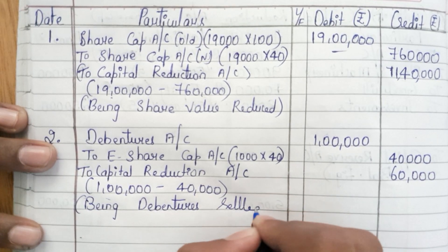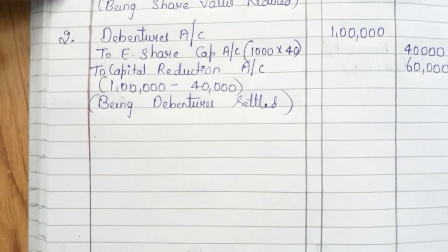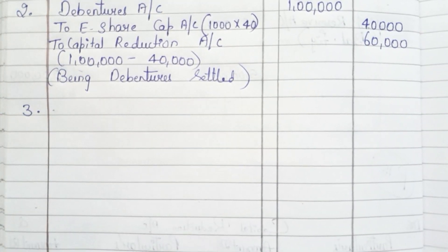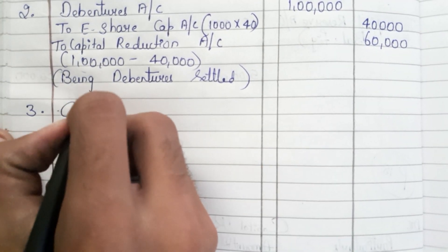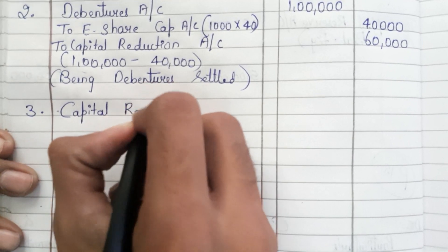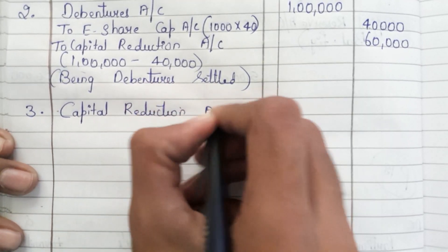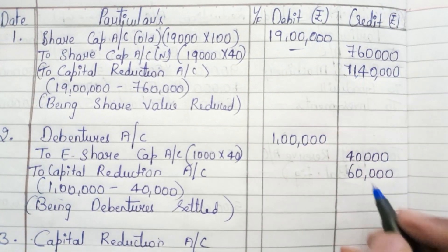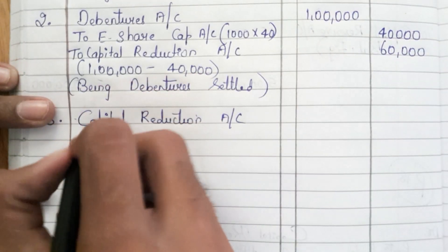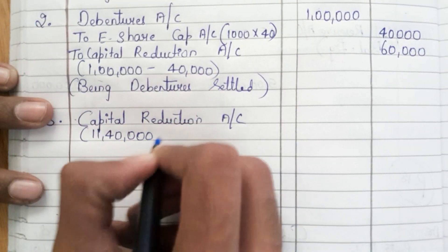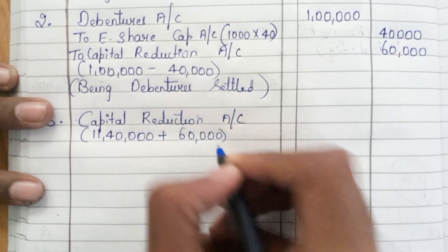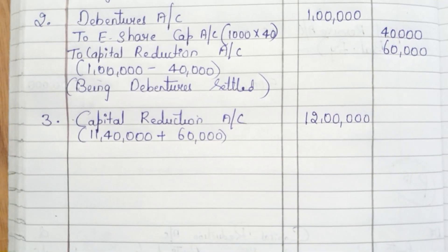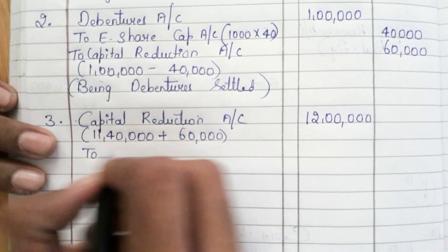This is the second journal entry. Now we need to pass the third journal entry, which is to write off all expenses and losses. First, I need to take the Capital Reduction Account balance: ₹11,40,000 plus ₹60,000 equals ₹12 lakh total. First, they have told us to write off the value of goodwill and P&L account.